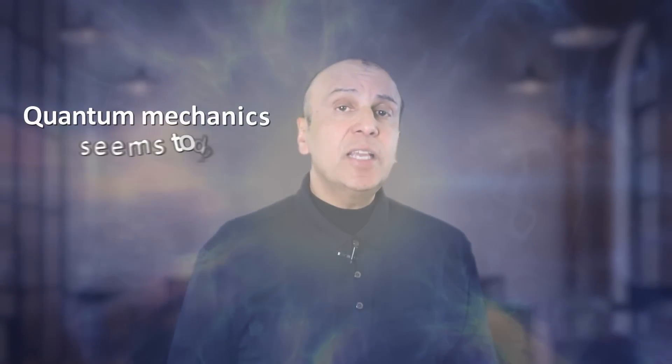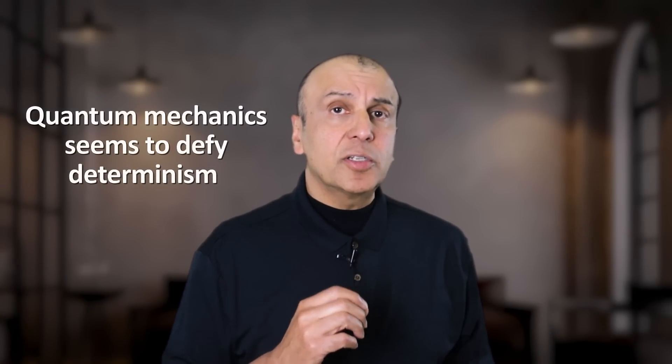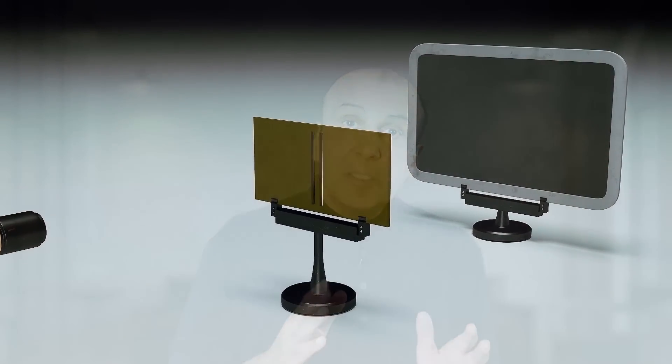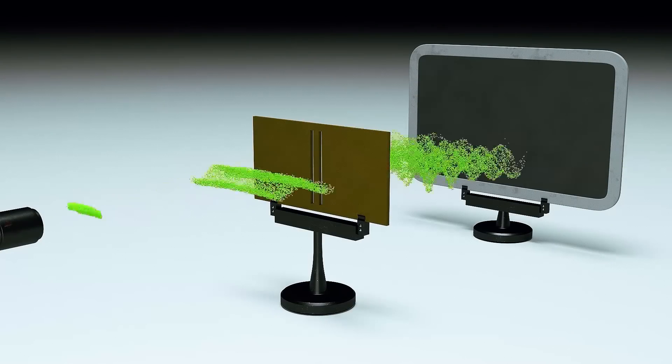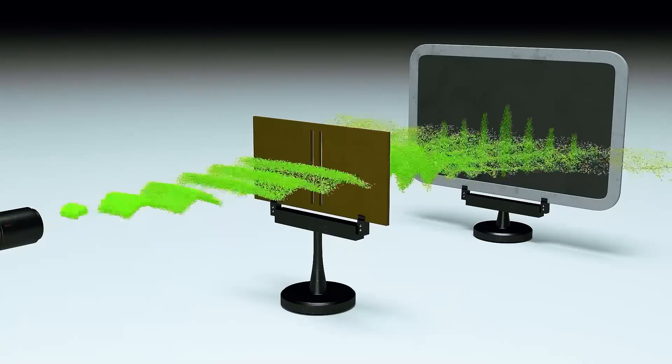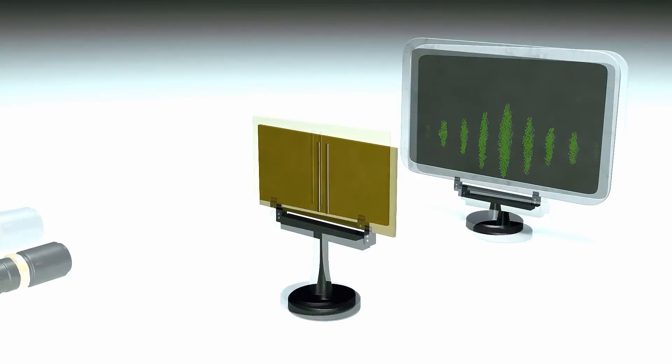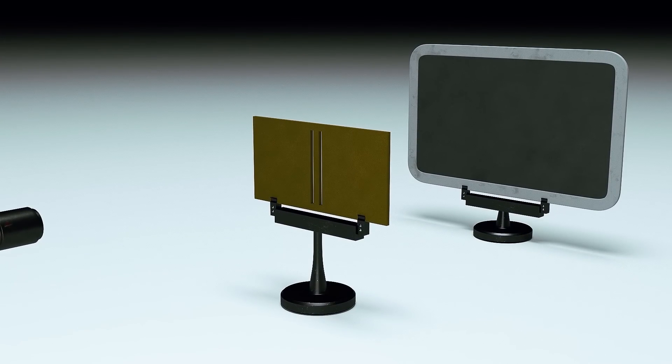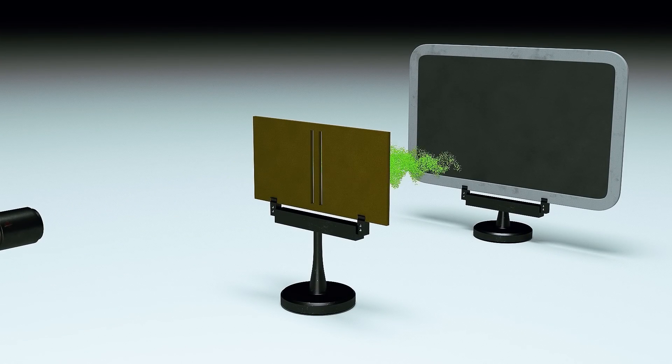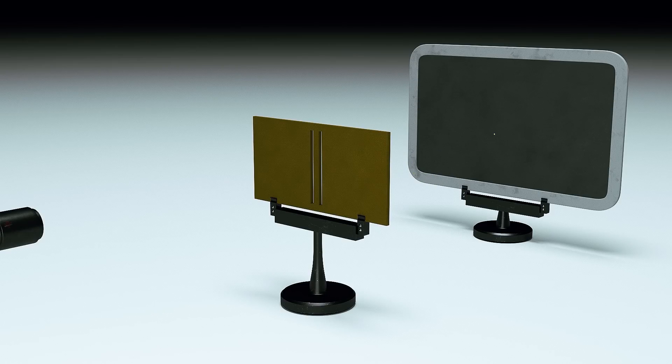Quantum mechanics, however, seems to defy this kind of causal determinism, because according to its laws, identical sets of initial conditions can result in different outcomes. This is because the outcomes of measurements cannot be predicted in advance. We can only predict their probabilities. So for example, when an electron goes through a double slit, we can only predict the probability of where we might find it when it lands on the far screen. The actual spot where it lands is random, subject to a probability, and its precise landing location cannot be predicted in advance. This is what quantum mechanics says. Or does it?